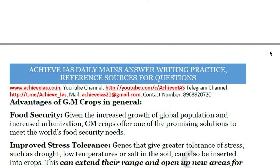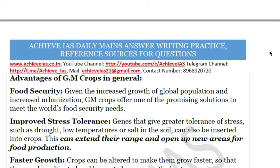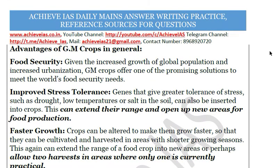Now, what are the advantages of GM crops in general? First is food security. Supporters of GM crops say that increased yield ensures greater food production. Due to increasing urbanization, less land is available for cultivation, population is growing, and agricultural fields are being converted to other land uses. GM crops can raise productivity on lesser land, ensuring food security.